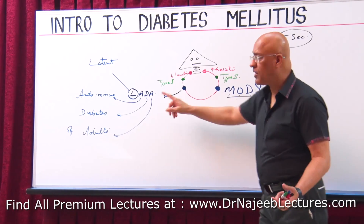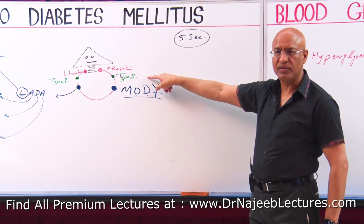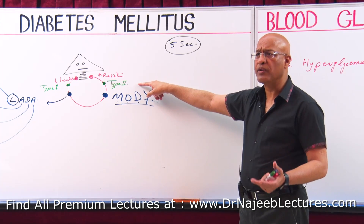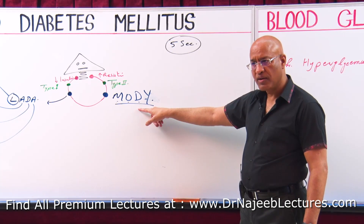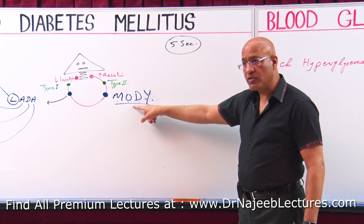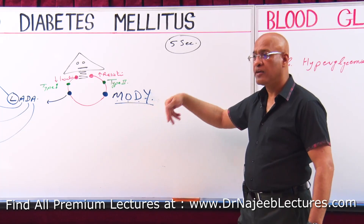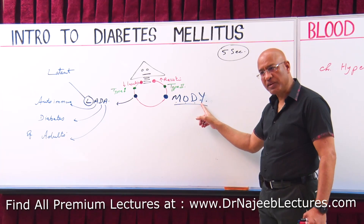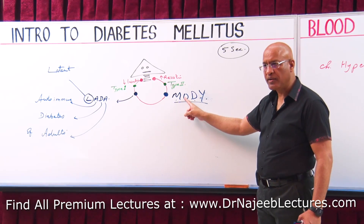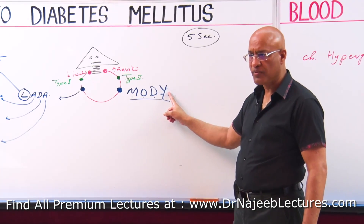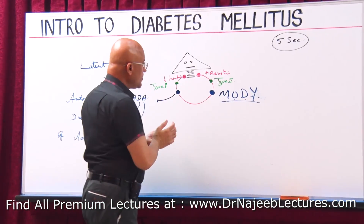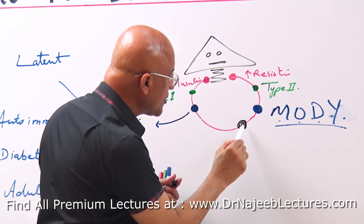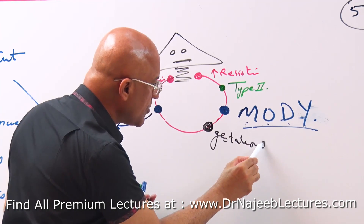Every doctor knows Type 2 diabetes patients are mostly older — usually 35 to 40 plus. But if a very young person has a type of diabetes behaving like Type 2, that person has Maturity Onset Diabetes of the Young. We have now talked about four types of diabetes. The fifth type is gestational diabetes.